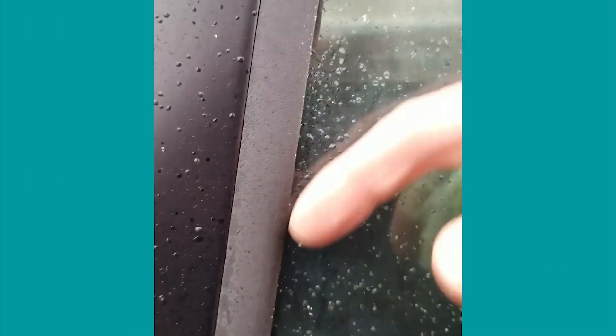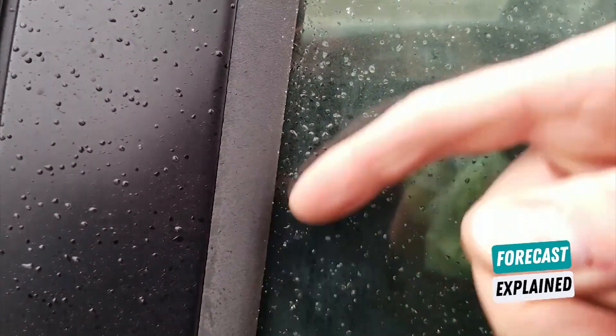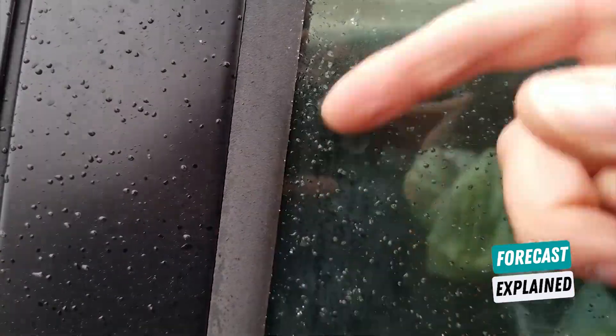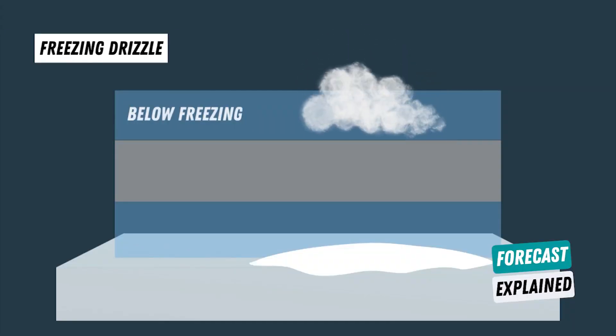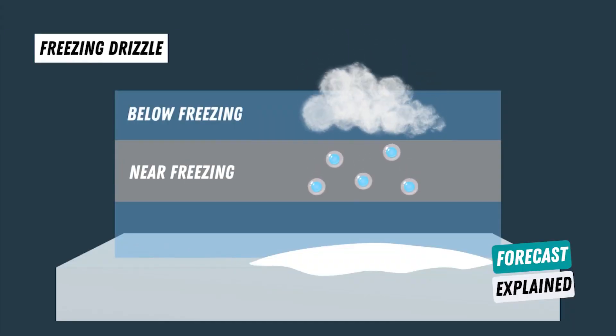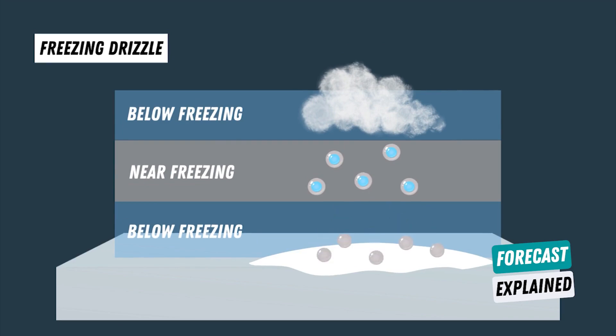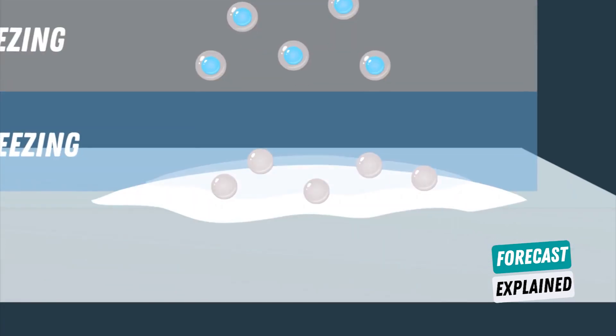Freezing drizzle often forms in clouds closer to the ground. The cloud produces very small droplets of super-cooled water, which fall through a completely sub-zero environment, instantly freezing on contact with any surface.